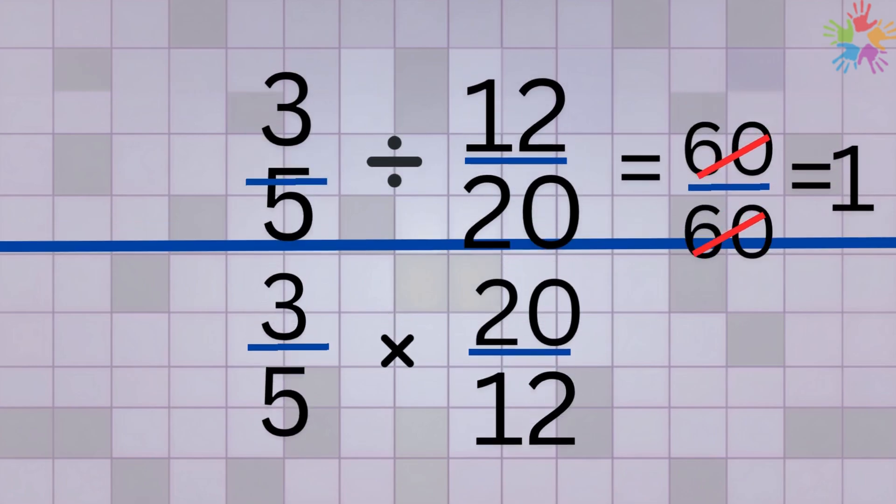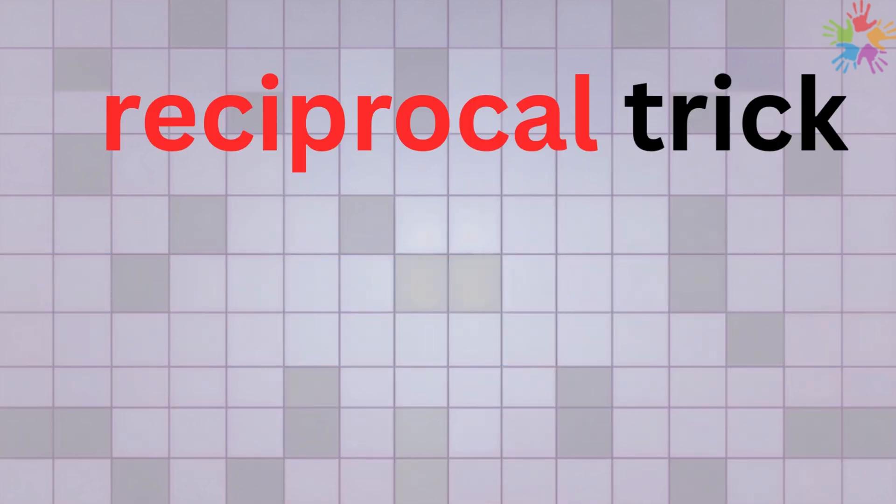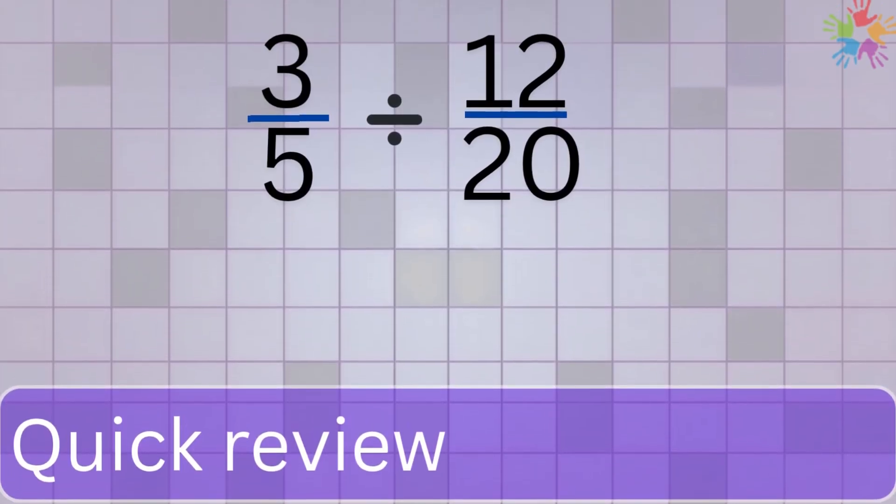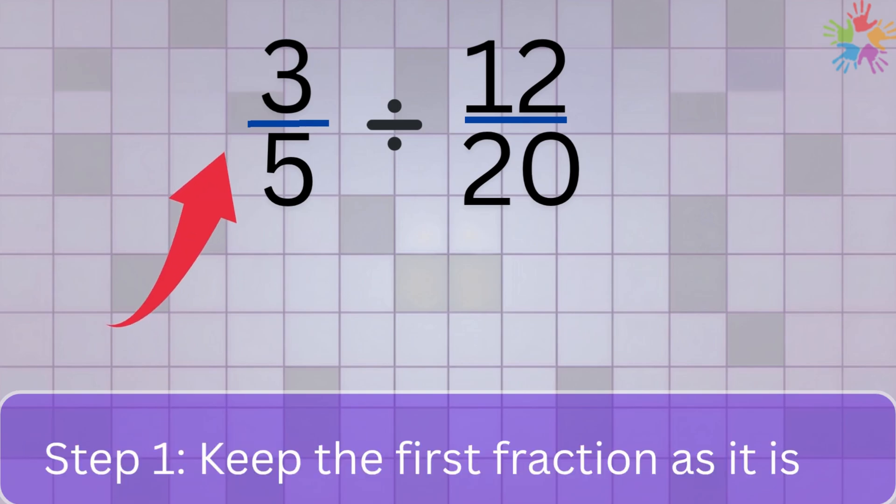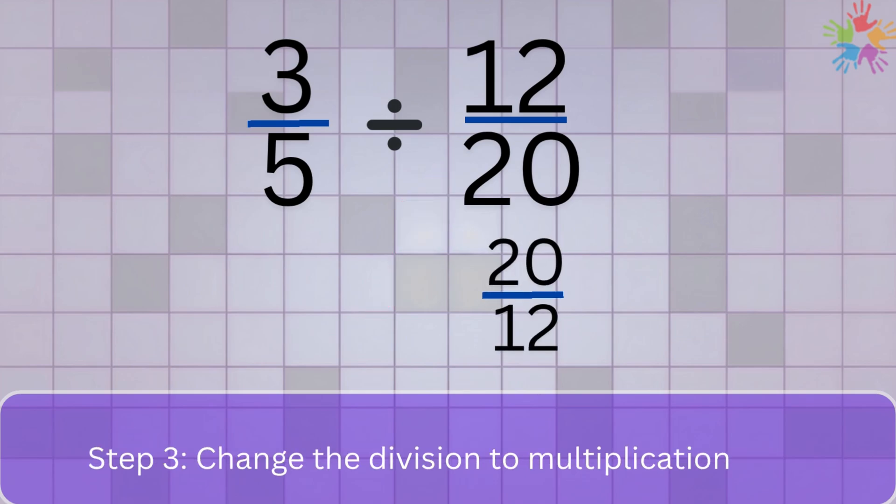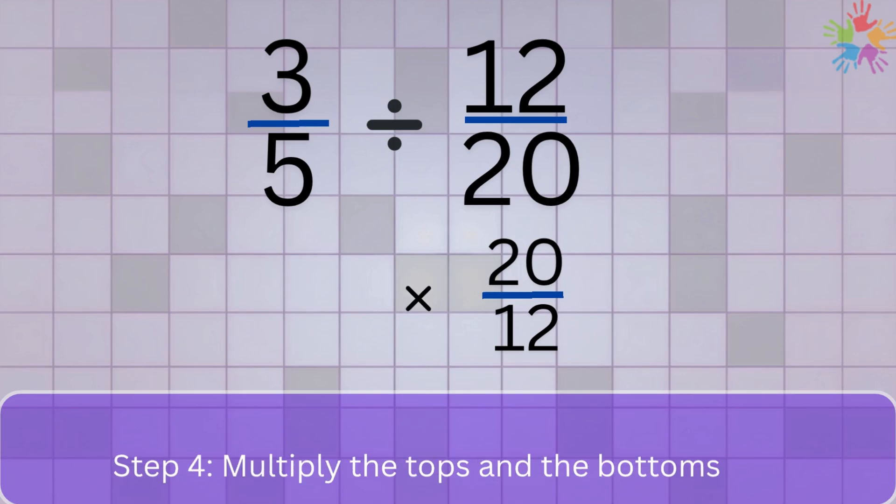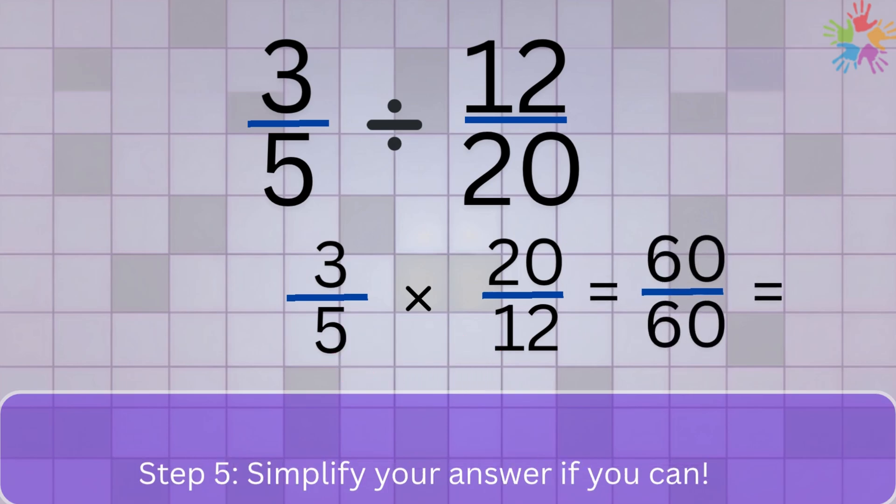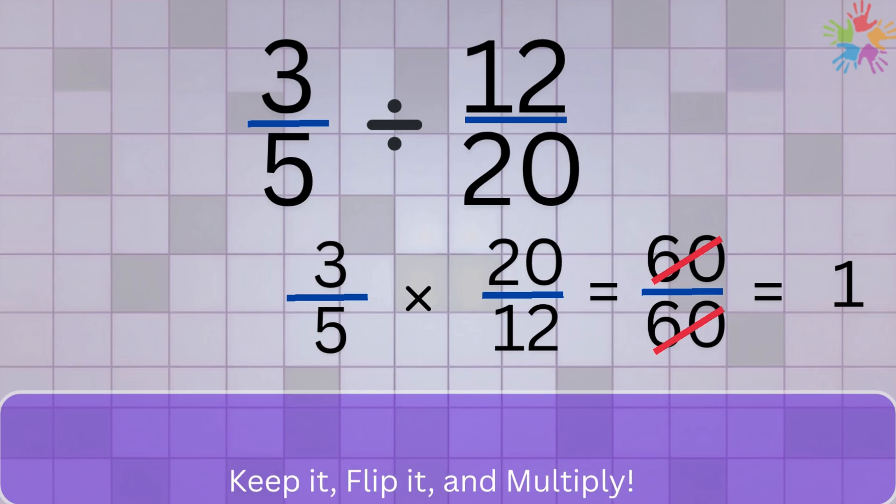Now you've learned how to divide fractions using the reciprocal trick. Let's quickly remember how it goes. Step 1: Keep the first fraction as it is. Step 2: Flip the second fraction, find its reciprocal. Step 3: Change the division to multiplication. Step 4: Multiply the tops and the bottoms. Step 5: Simplify your answer if you can. So when you see a fraction division problem, just keep it, flip it, and multiply.